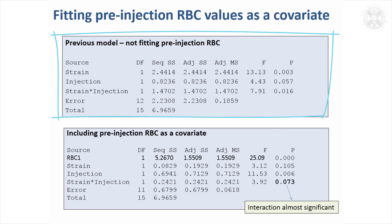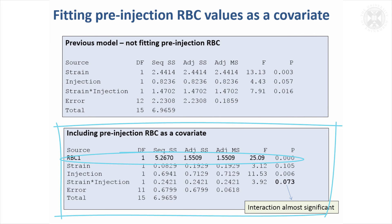The original model had p-values for each fitted effect. Now including red blood cell count in the model adds a row for red blood cell count, which is highly significant — meaning a lot of variability in post-treatment RBC can be accounted for by the pre-treatment level. This makes the model more efficient and adjusts tests for strain, injection, and the interaction for pre-treatment differences. The interaction is now borderline but we're still justified to investigate the injection effect for individual strains.